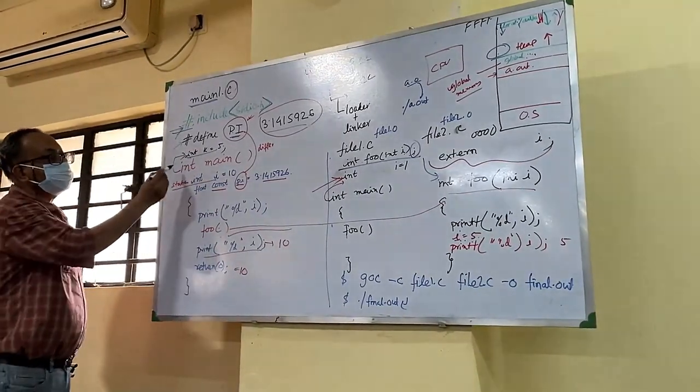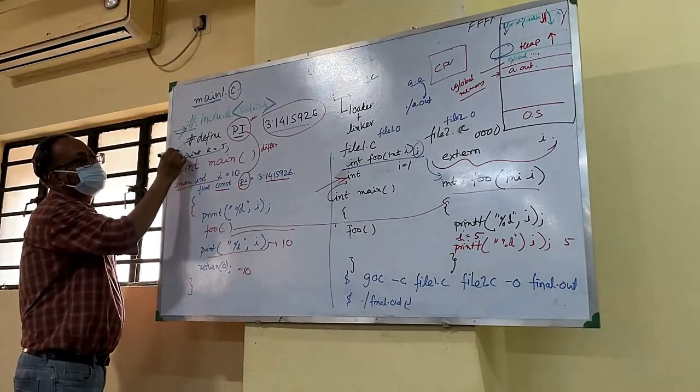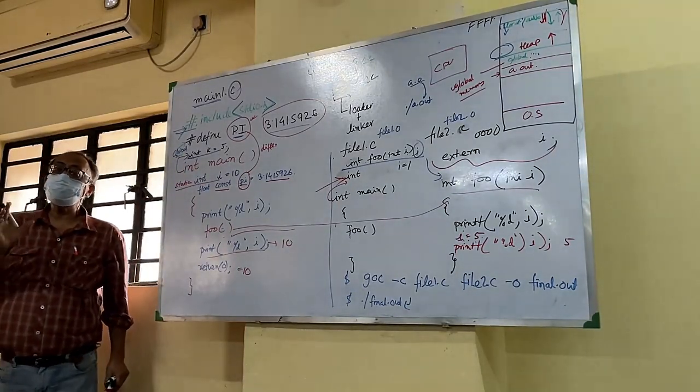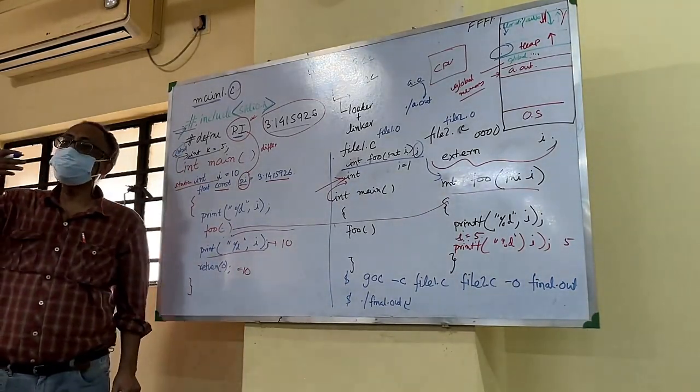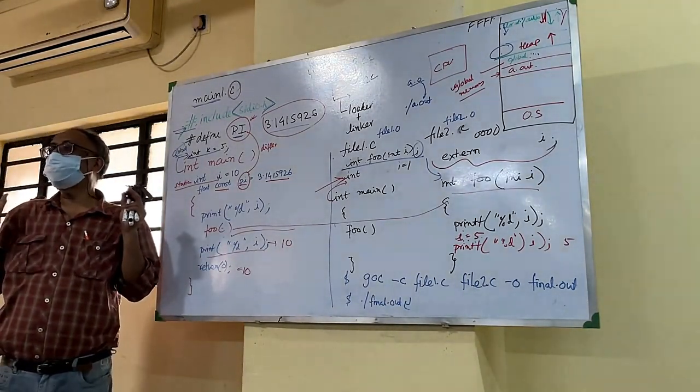And the variable, any variable declaration outside main, that is a global variable. In other programming like C, C++, Python, Java, we should not use global variable at all.